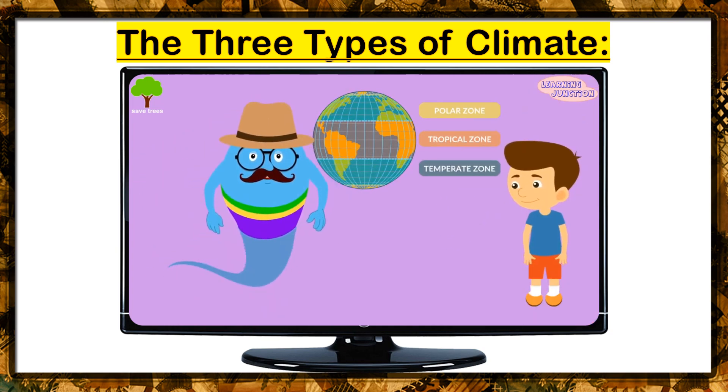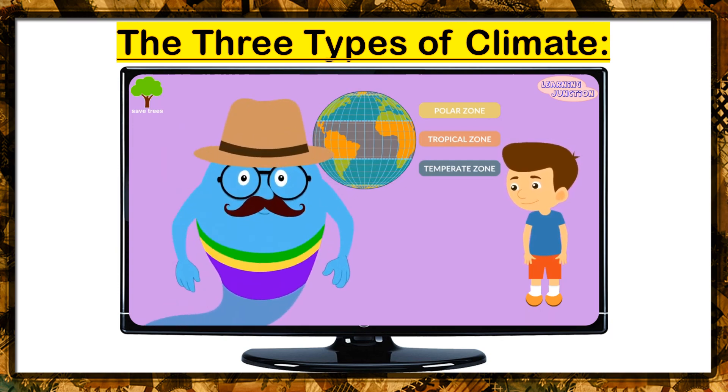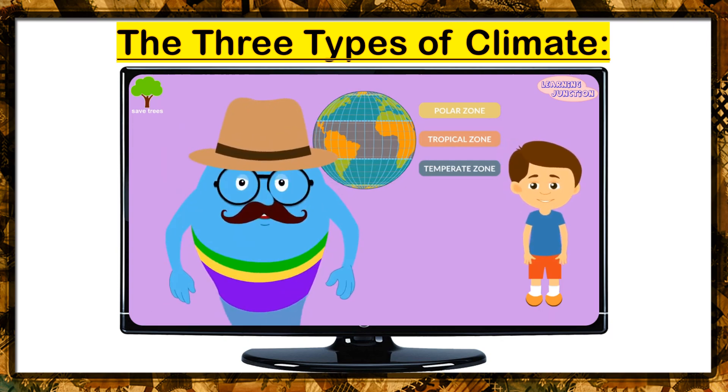Now you know a lot about climate zones on the Earth. The coldest polar zone, warm and humid tropical zone, and the moderate temperate zone. Stay tuned for more videos. Bye-bye.